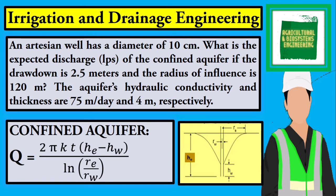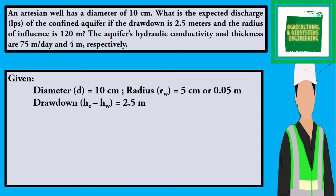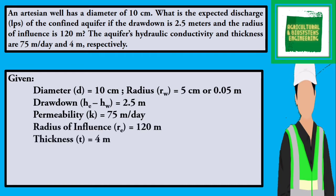The first thing we have to do is to identify the given. We have the diameter of the well to be 10 cm. Therefore, its radius is 5 cm, or in meters, it will be 0.05. The drawdown is 2.5 m, the permeability is 75 m per day, the radius of influence is 120 m, and the thickness is 4 m.